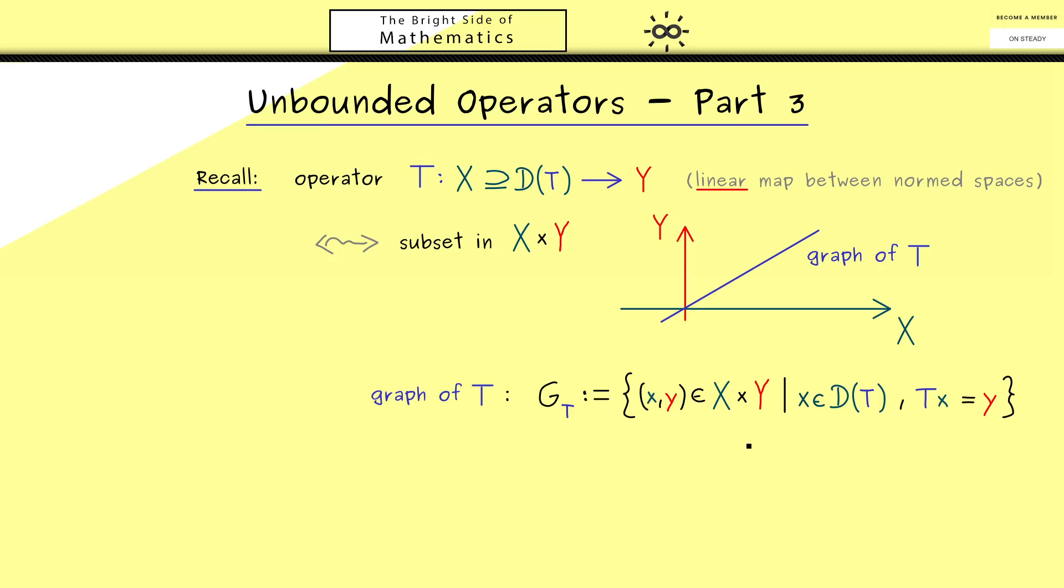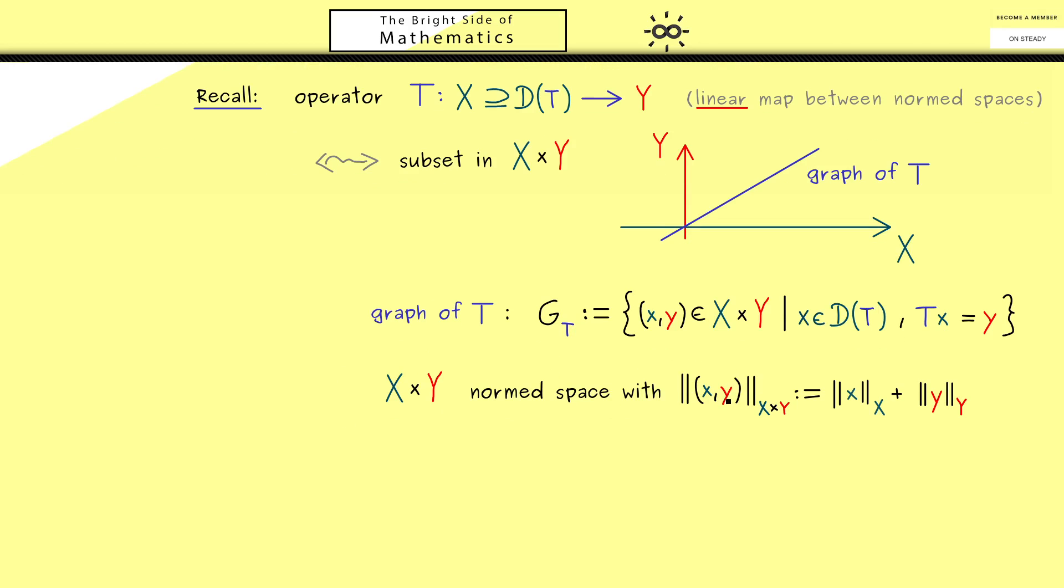This means we write down what one point (x,y) has to fulfill: first, that x lies in the domain of T, and second, we need that Tx is equal to y. This Cartesian product here is a normed space again. It's a whole vector space where we can also measure lengths. What is the corresponding norm here? The common one is just to add the two norms: take the norm of x and add the norm of y. This defines a norm again.